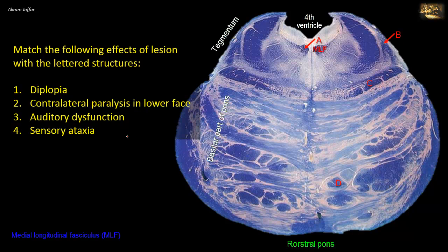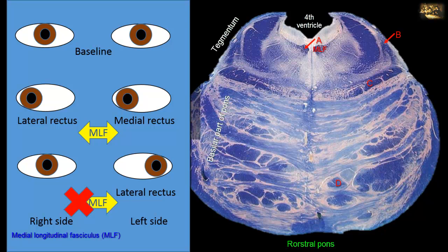For example, in horizontal eye movements, the abducens nucleus — which supplies the lateral rectus muscle — projects via the medial longitudinal fasciculus from the pons to the contralateral oculomotor nucleus in the rostral midbrain, specifically the part supplying the medial rectus muscle. A lesion in the medial longitudinal fasciculus results in absent adduction of the ipsilateral eye, usually associated with nystagmus of the abducting eye — a condition called internuclear ophthalmoplegia.